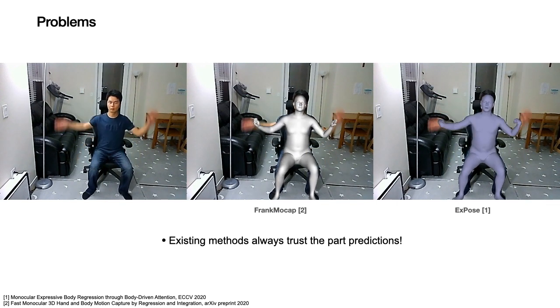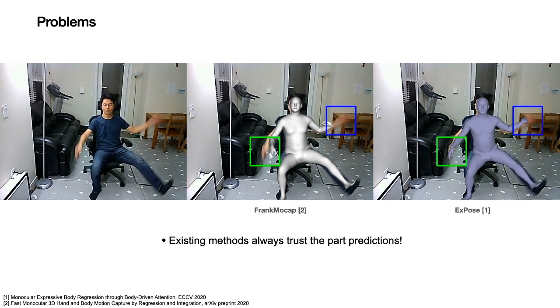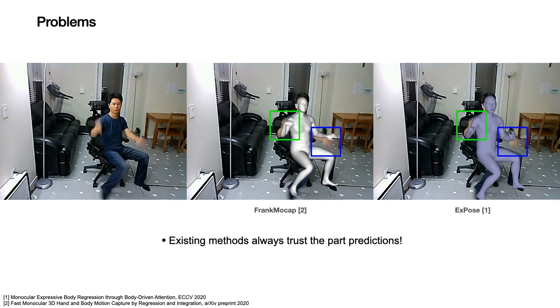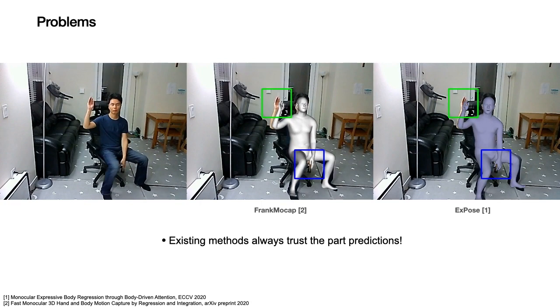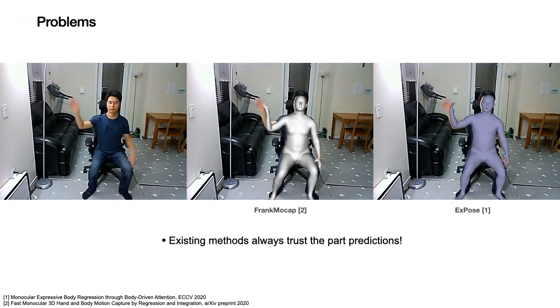For example, when the hand is blurry, previous methods like Expose and Frank MoCap predict an unnatural wrist pose. In many such cases, the hands and face are hard to estimate.